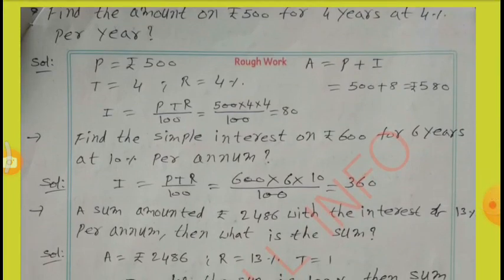Find the amount on Rs.500 for 4 years at 4% per year. Here, P equal to Rs.500, T equal to 4, R equal to 4%. Using I equal to PTR by 100, by substituting these values in the formula we get I equal to 80. Therefore, A equal to P plus I: 500 plus 80 equal to Rs.580.